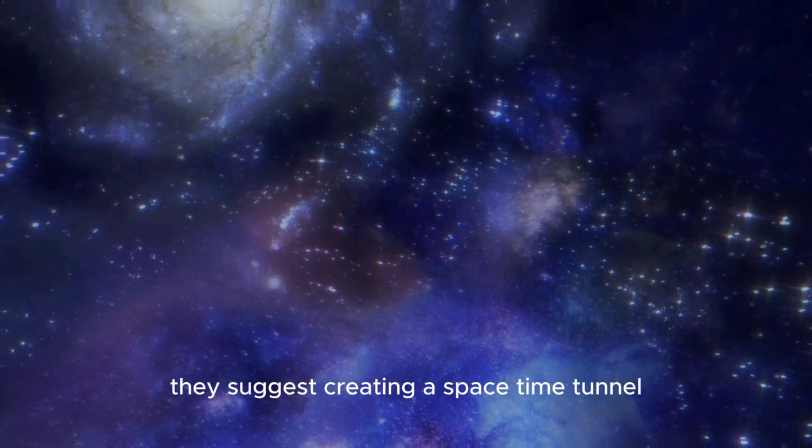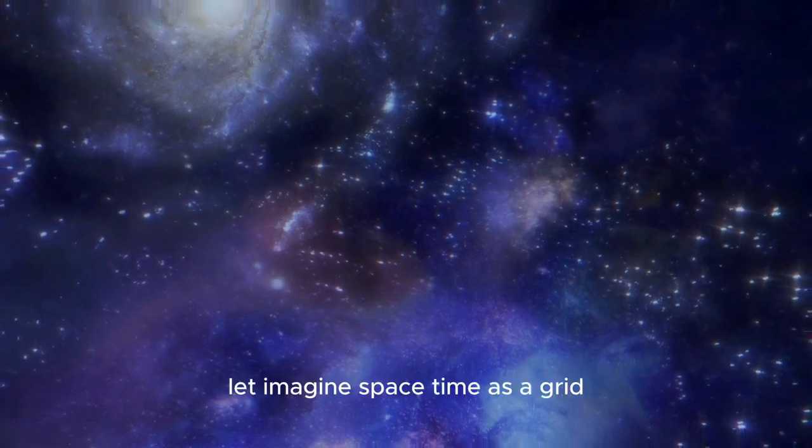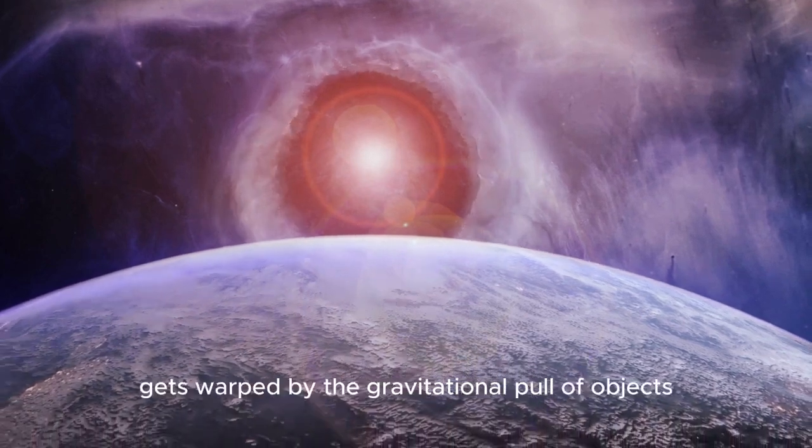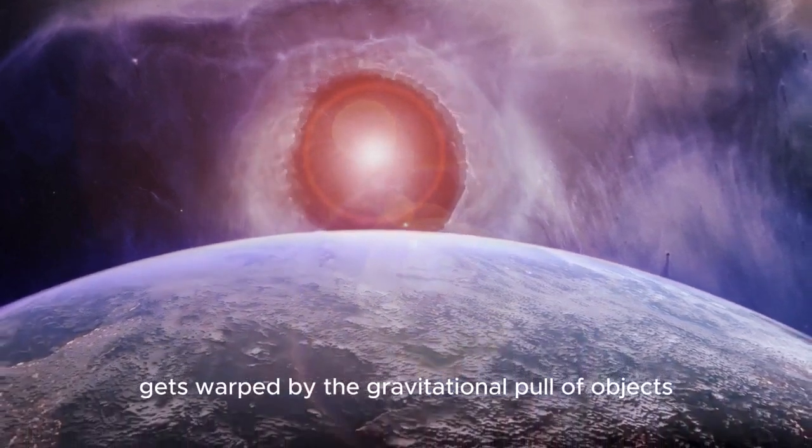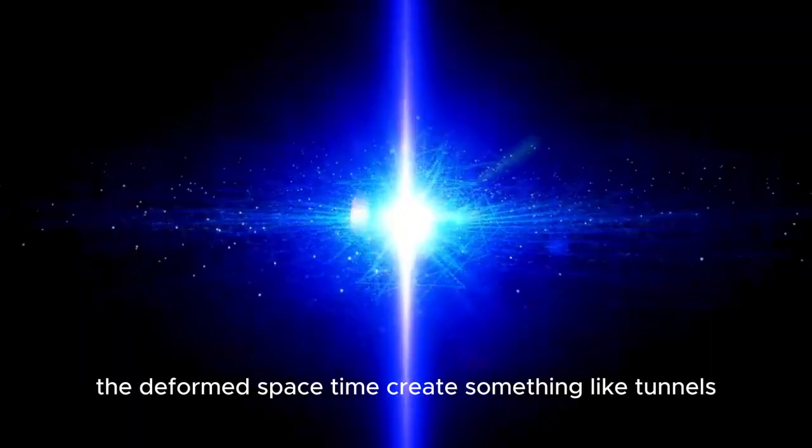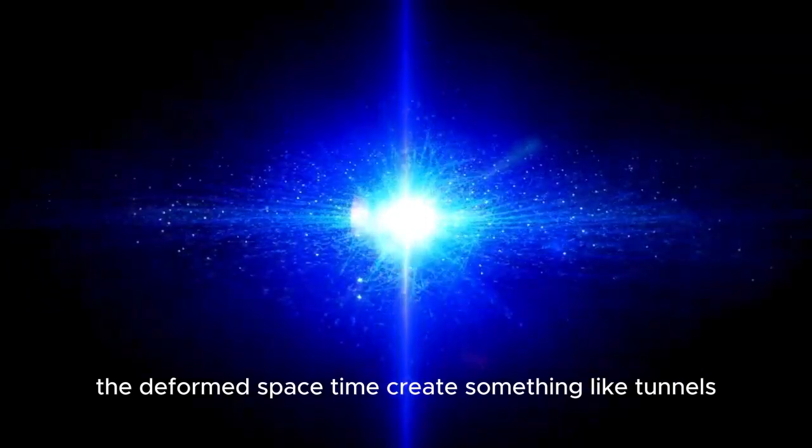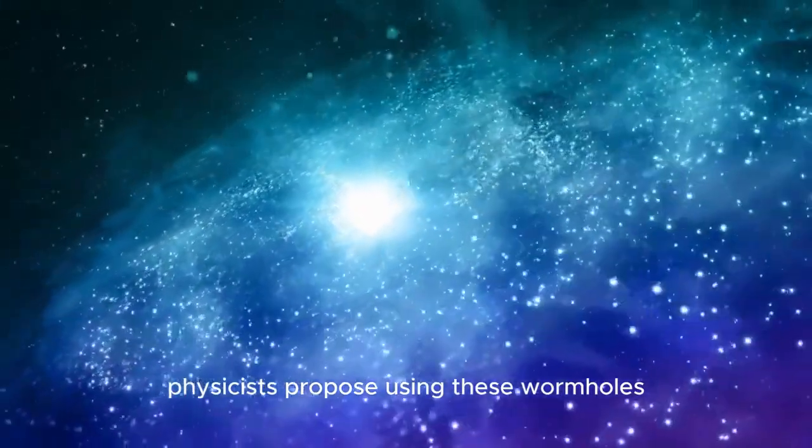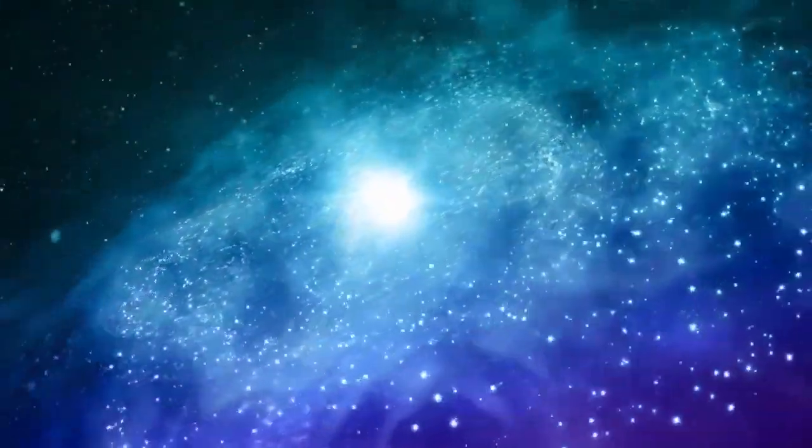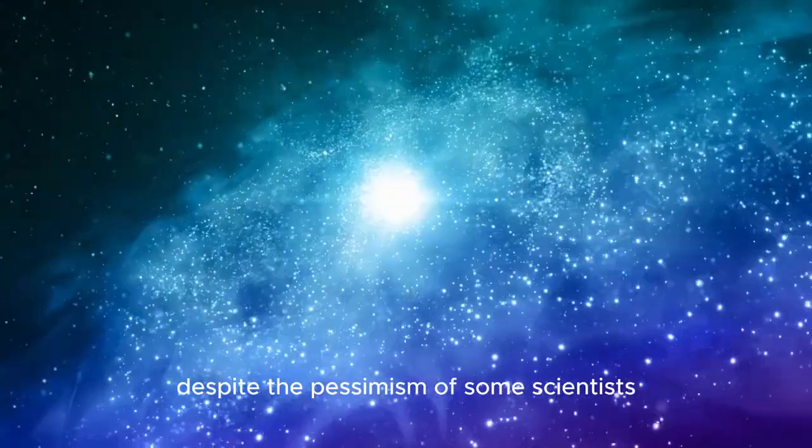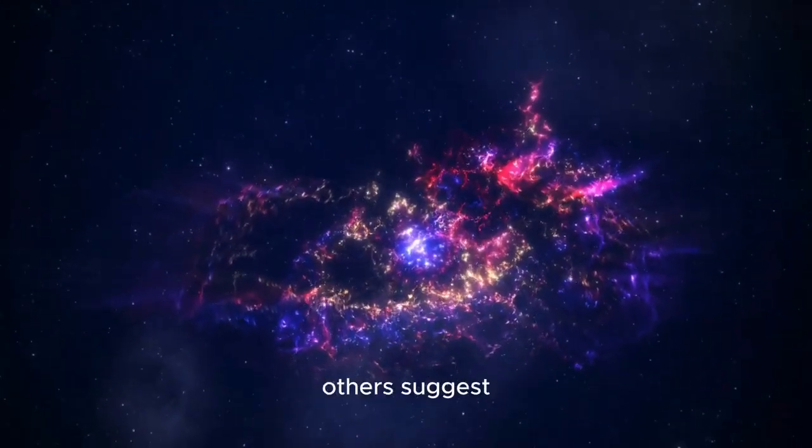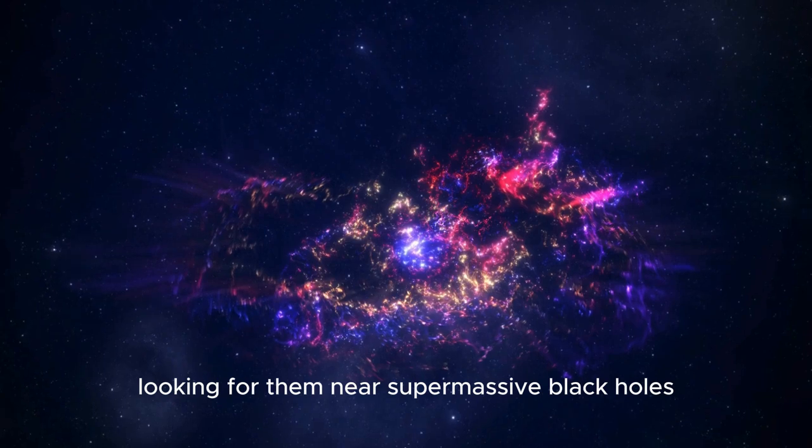But modern scientists have come up with ways to potentially bypass the laws of physics and outpace light without actually exceeding it. They suggest creating a space-time tunnel. Let's imagine space-time as a grid. This fabric of space-time gets warped by the gravitational pull of objects. The deformed space-time creates something like tunnels, allowing you to take a shortcut between two points, known as wormholes. Physicists propose using these wormholes for interstellar travel. Despite the pessimism of some scientists who say that such wormholes could only form at the birth of the universe, others suggest looking for them near supermassive black holes.